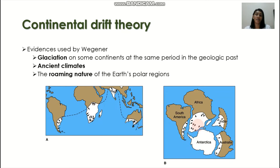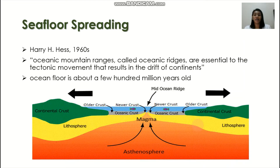Although Wegener had different evidences, most geologists during his time didn't support him because he didn't have a concrete model to support his theory. The second theory we have is the seafloor spreading theory, proposed by Harry Hess in the 1960s. According to Hess, it is actually the seafloor which contributed to the movement of the continents. The oceanic mountain ranges called oceanic ridges are essential to the tectonic movement that results in the drift of the continents. For Hess, the seafloor spreading is what is responsible for the moving of the continents — this was the concept lacking in Wegener's continental drift theory.